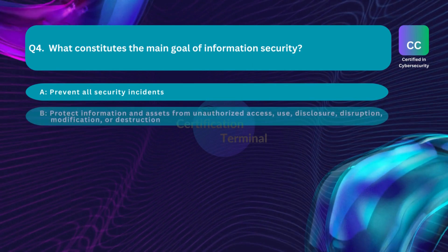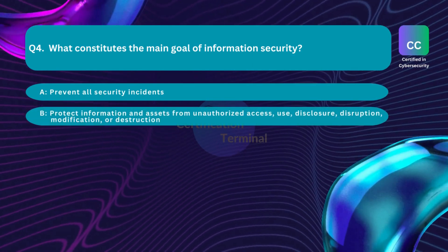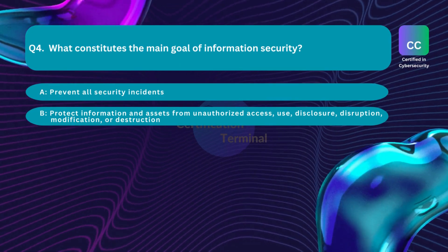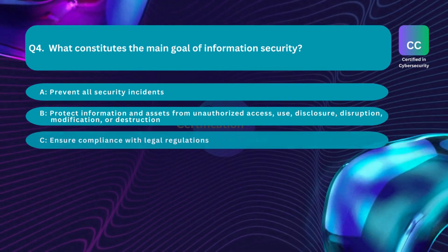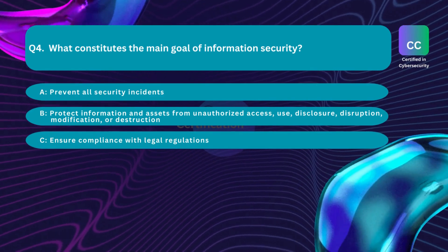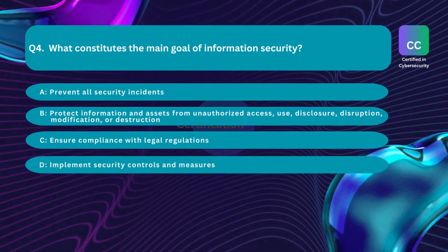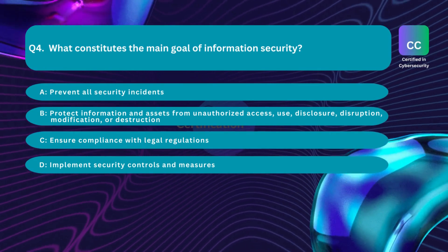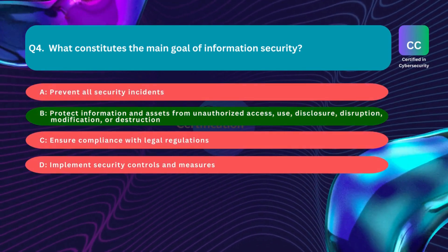Question number four: What constitutes the main goal of information security? Option A: prevent all security incidents. Option B: protect information and assets from unauthorized access, use, disclosure, disruption, modification, or destruction. Option C: ensure compliance with legal regulations. Option D: implement security controls and measures. The correct answer is Option B.